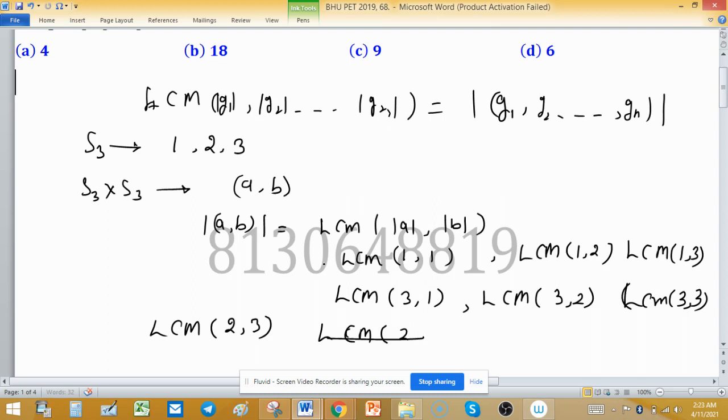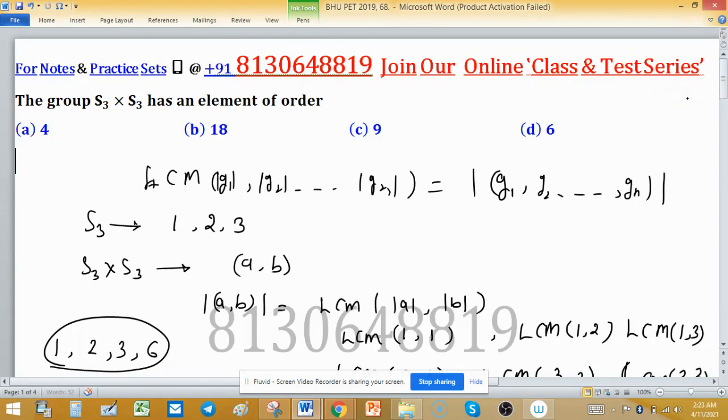But you can check here all LCM is either 1, 2, 3 and 6, none other than these LCMs. So possible order of this element is 6, so option D is correct.